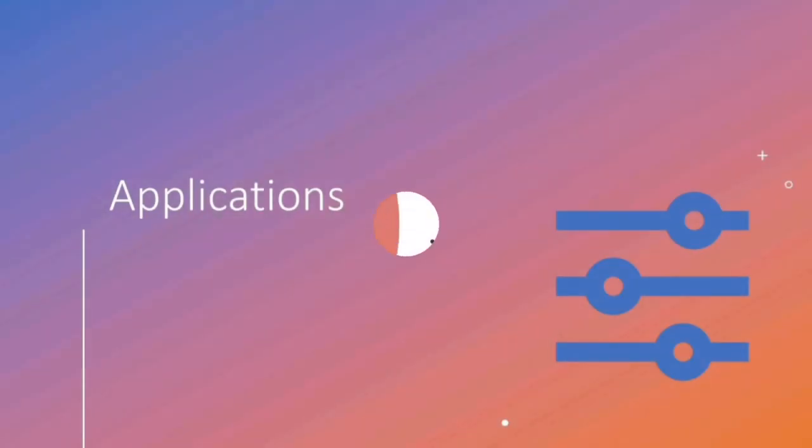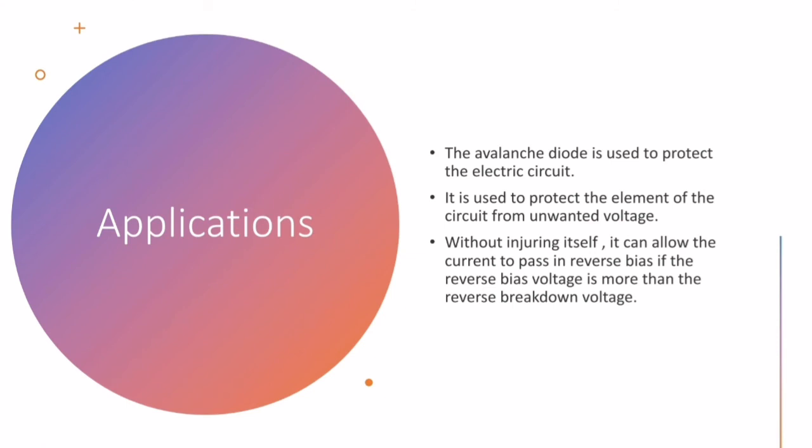Applications. In application, the avalanche photodiode is used to protect the electric circuit.